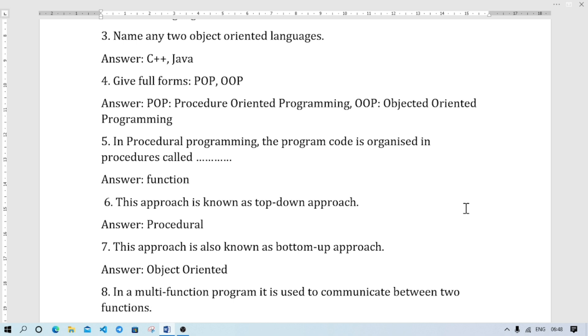Number five: in procedural programming, the program is organized in procedures called functions. In procedural programming the program is divided into functions. And in object-oriented programming the program is divided into objects. Procedure-oriented programming is function-based, and object-oriented programming is data-based, that means objects.